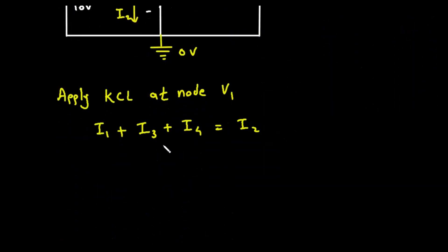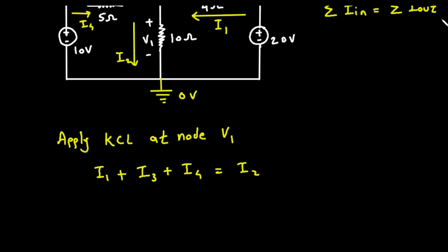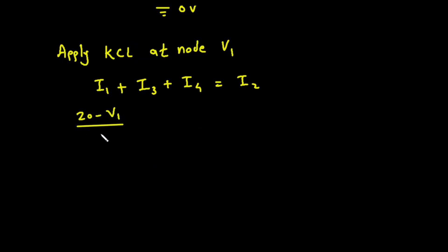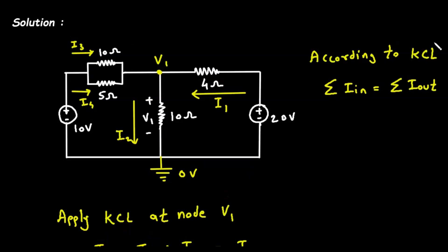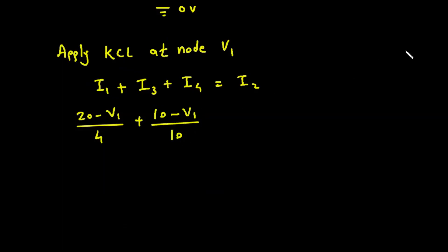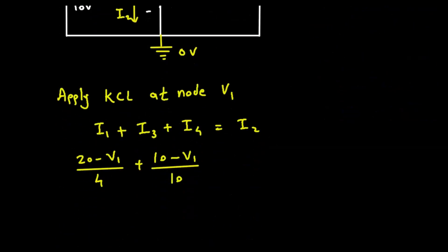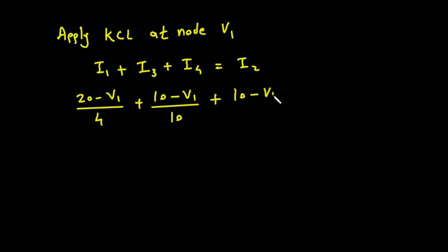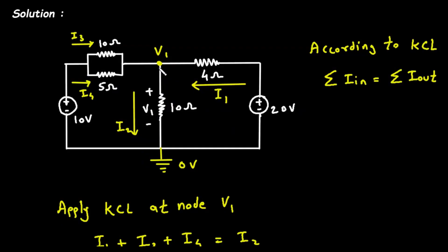Now let's write this in voltage form. i1 = (20 − V1) / 4, i3 = (10 − V1) / 10, and i4 = (10 − V1) / 5. These equal i2, where i2 = (V1 − 0) / 10 = V1 / 10.